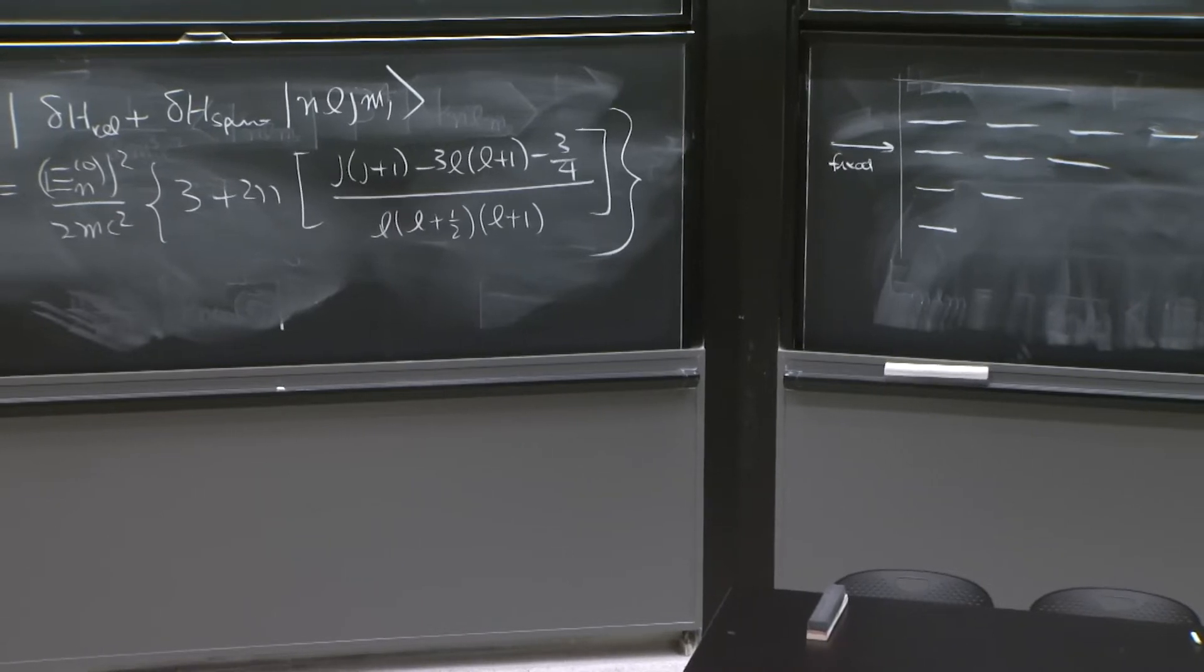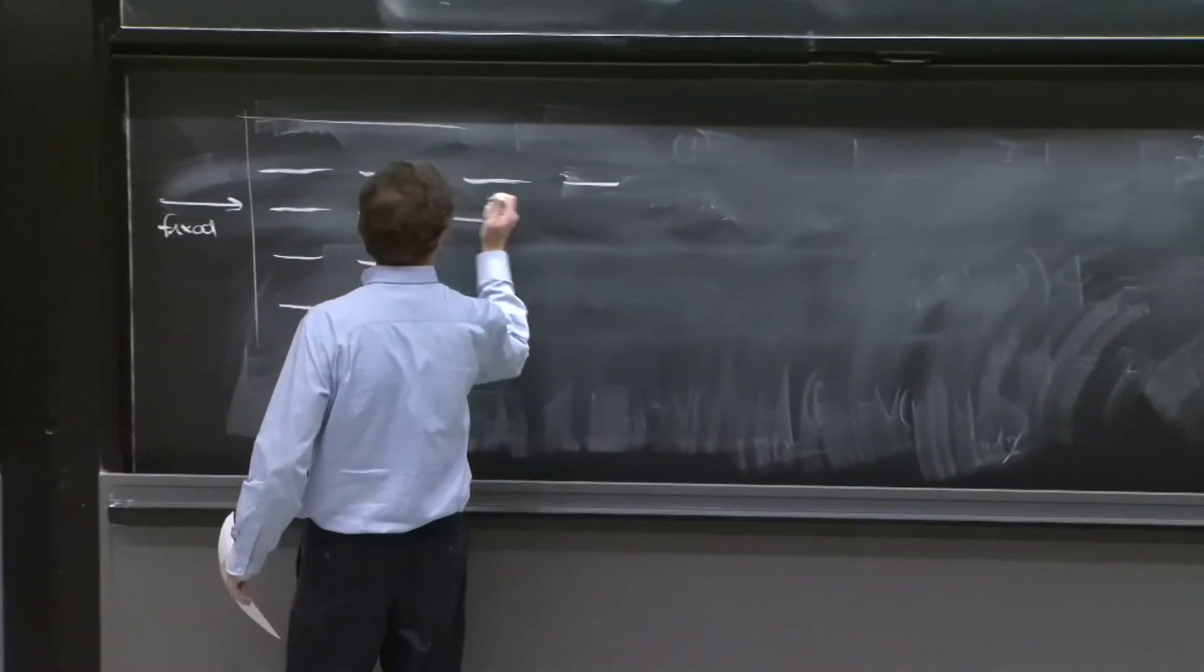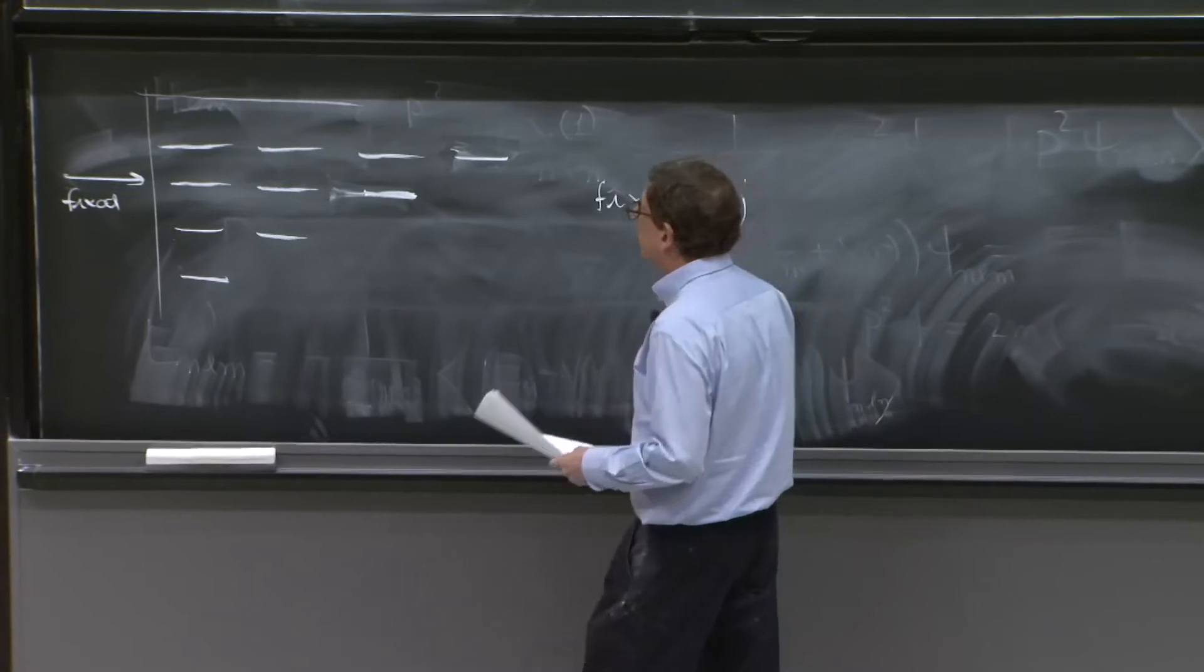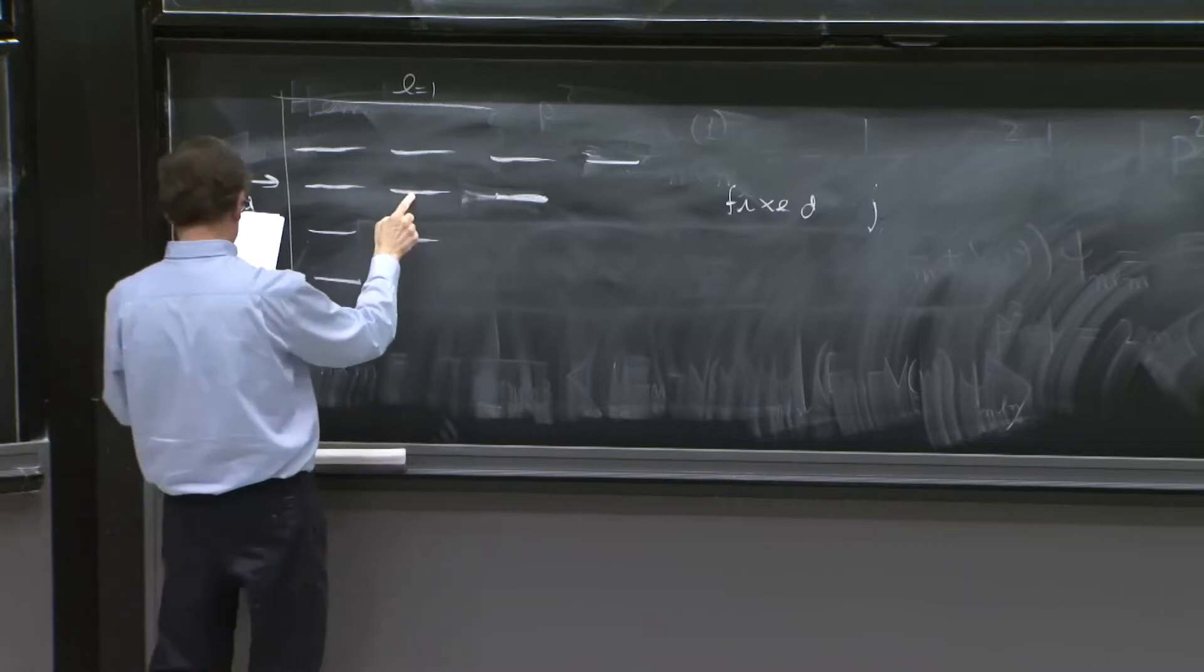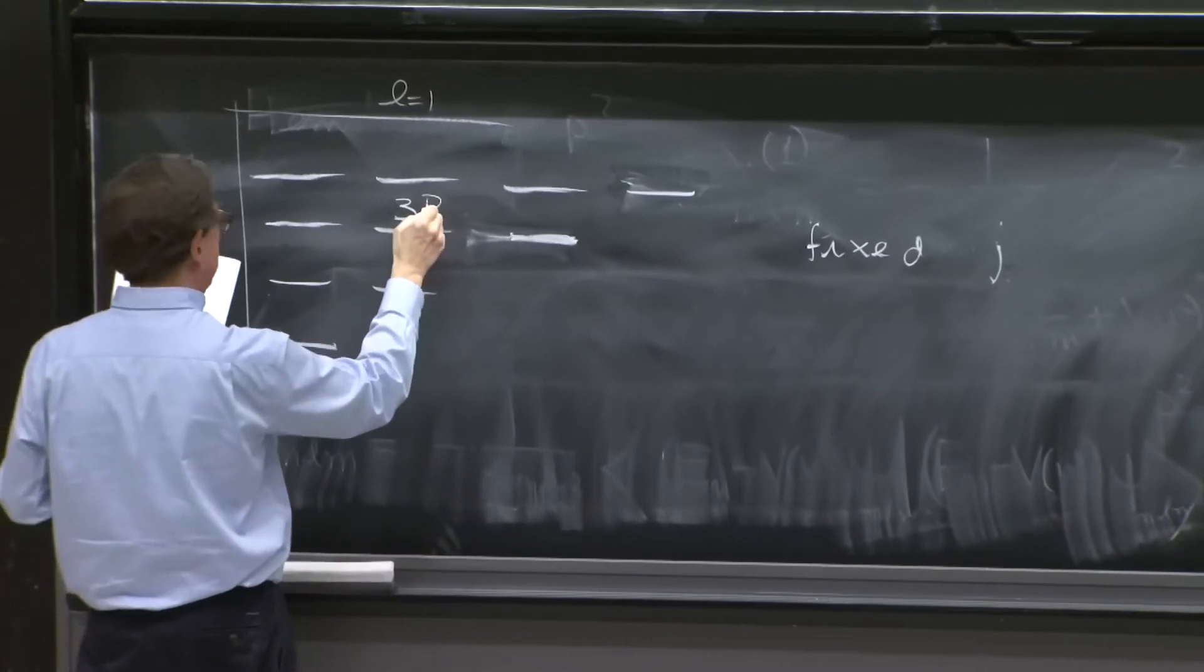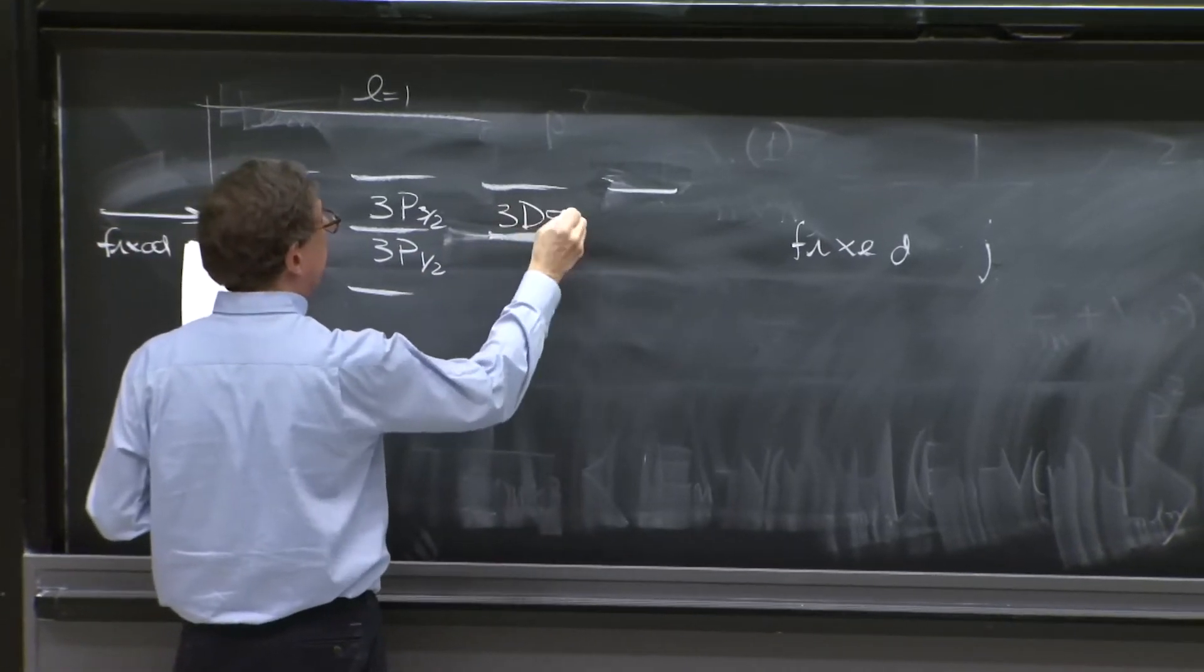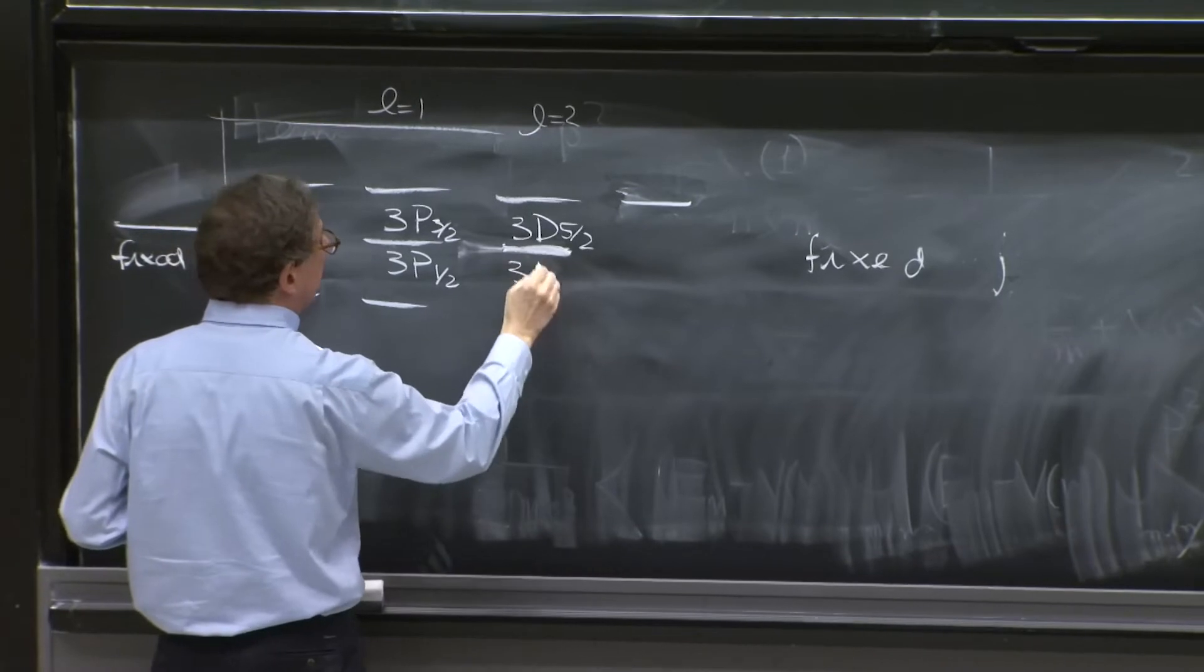And you say the following. I mean, suppose you think of some states of fixed j. Fixed j states. For example, these states, these are l equals 1 over here. So here I have 1, 2, 3, 3p 3 halves and 3p 1 halves. Here I have 3d 5 halves, because this is l equals 2. So 2 plus 1 half and 2 minus 1 half.